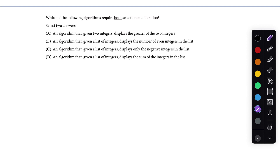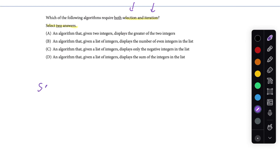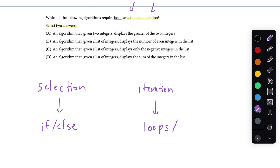This says which of the following algorithms require both selection and iteration — select two answers. Before we dive in, let's talk about what these two words mean. When you think selection, think if/else — selecting what part of the algorithm to execute depending on some criteria. If some condition is true, execute this code; otherwise do something else. When you see iteration, think loops or repetition — doing some operation many times, as you'd go through an array or a string.